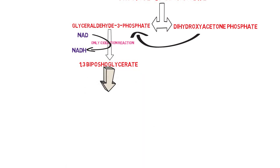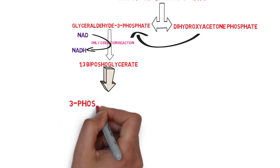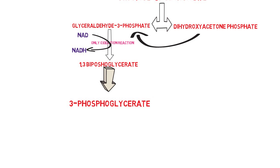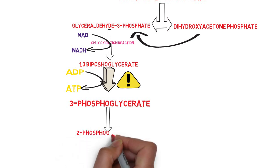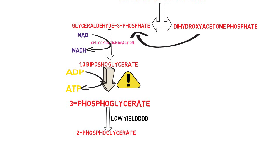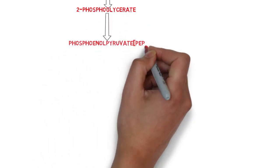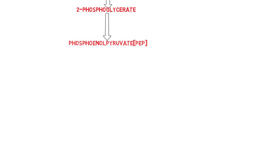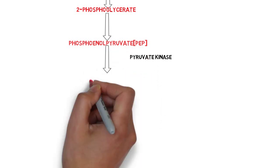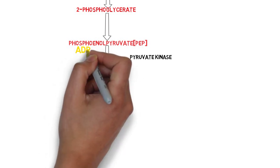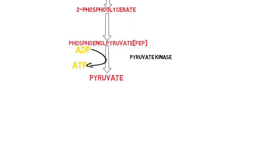From there, glyceraldehyde-1,3-bisphosphate is a high-energy compound and it gets converted into glyceraldehyde-3-phosphate. Since a high-energy compound is being converted into a low-energy compound, energy is released, and this energy is utilized to phosphorylate ADP and convert it into ATP. Please remember — this is an example of substrate-level phosphorylation. Then glyceraldehyde-3-phosphate is converted into glyceraldehyde-2-phosphate, and this is converted into phosphoenolpyruvate, which is also a very high-energy compound. Phosphoenolpyruvate is acted upon by pyruvate kinase, converting it into pyruvate and releasing energy, which again phosphorylates ADP into ATP — this is the second example of substrate-level phosphorylation.